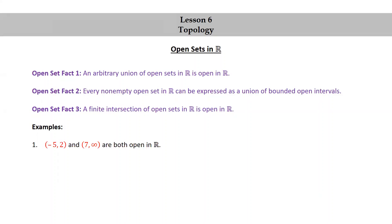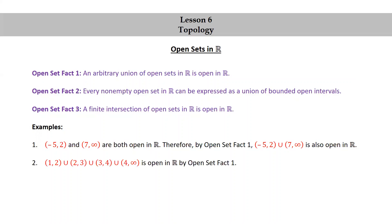Let's look at some examples. The open interval (−5, 2) and the open interval (7, ∞) are both open in R. Therefore, by open set fact 1, (−5, 2) ∪ (7, ∞) is also open in R. Also, (1, 2) ∪ (2, 3) ∪ (3, 4) ∪ (4, ∞) is open in R by open set fact 1.